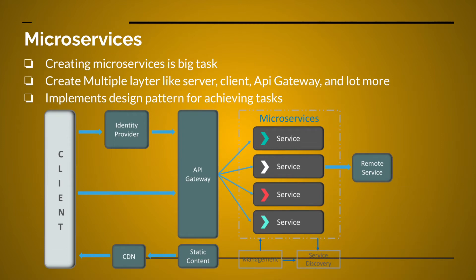Each microservice has to connect with its own database. In microservice architecture, each service has its own database, so data is in isolated form. Combining data from one service to another is a bigger challenge. You also have to implement many design patterns — for example, the circuit breaker pattern, the API gateway pattern, and if you're doing distributed transactions, you may need to implement the saga pattern. It's a very complex task requiring a lot of configuration, and you have to monitor each and every service.